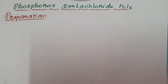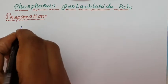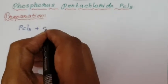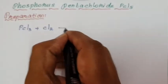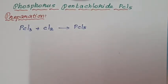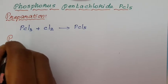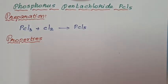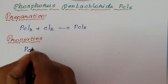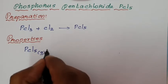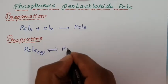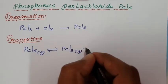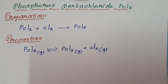Reviewing the preparation: PCl₃ treated with excess chlorine (Cl₂) directly forms PCl₅. This is the only preparation method. For chemical properties, the first reaction is that PCl₅ in the gaseous state undergoes a decomposition reaction, which is actually an equilibrium reaction.